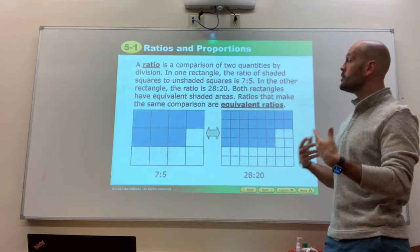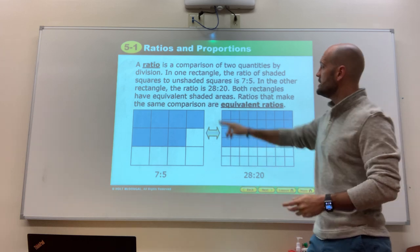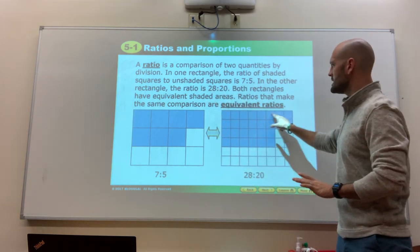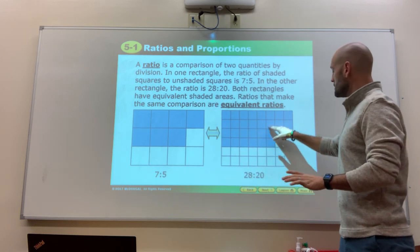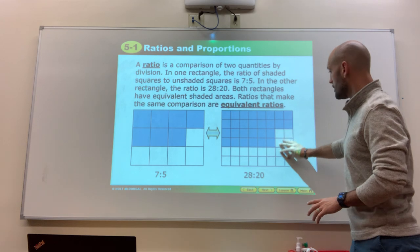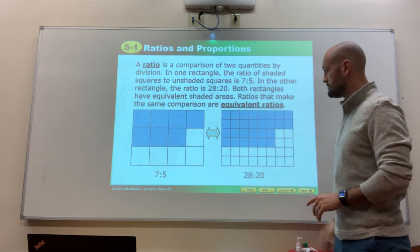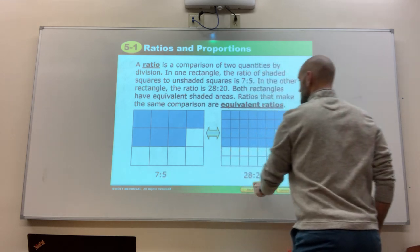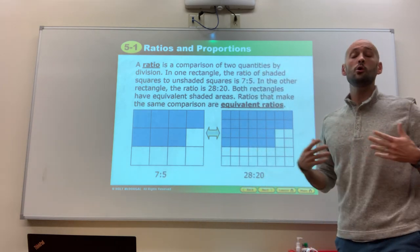That is equivalent to the ratio of 28 to 20. Because again, you may say, well, that's 28 shaded. Agreed. But look at total mass of shaded versus total mass unshaded. These two ratios are the same, or what we call equivalent.